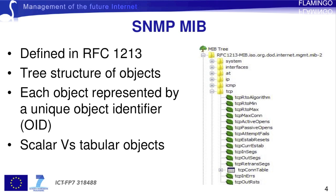SNMP itself does not define what information a managed device or system should offer. This information is defined by the SNMP Management Information Base, or MIB, which is specifically defined in RFC 1213. The SNMP MIB is a virtual information store which has a hierarchical tree-structure of objects, each represented by a unique object identifier known as the OID. There are two types of objects: scalar and tabular. Scalar objects define a single object instance, whereas tabular objects define multiple related object instances grouped in tables.